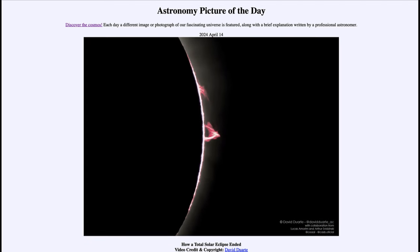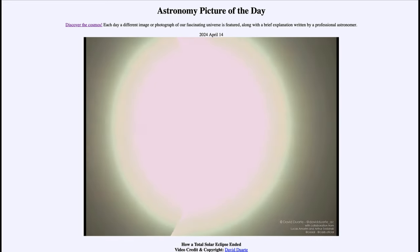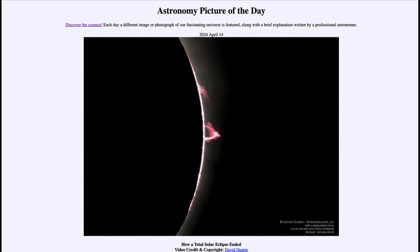And then all of a sudden, boom, it looks like it's exploding. That's really not—that's just more of the sun becoming visible. The solar surface is so bright that it overwhelms everything else.